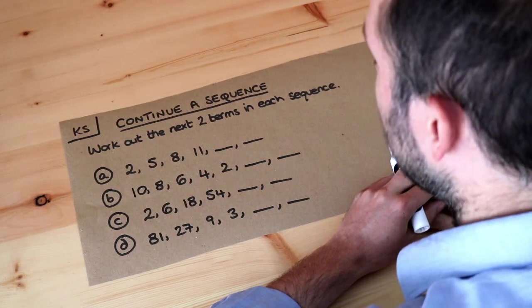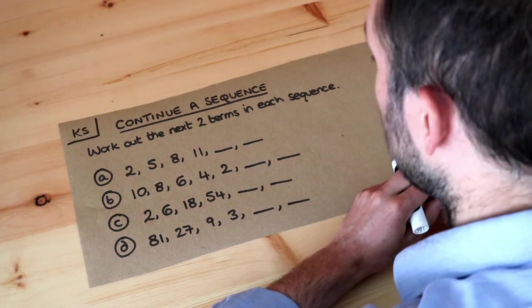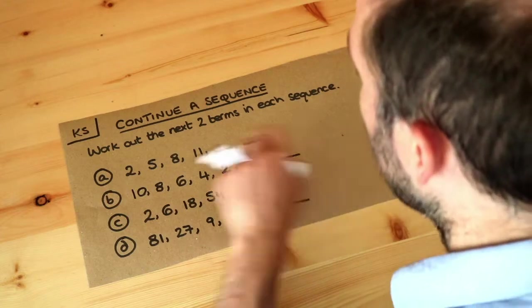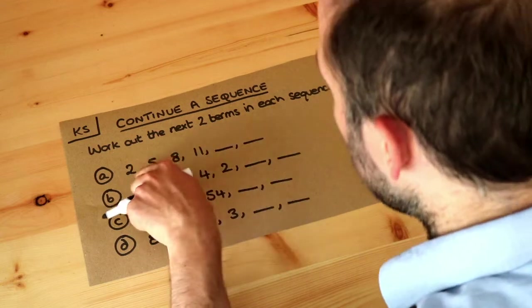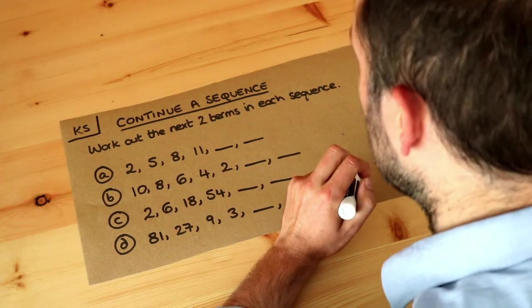Hello and welcome to this Dr Ross Mass key skill video on continuing a sequence. Now a sequence is just a list of numbers in some particular order and usually the numbers in your sequence have some kind of pattern.